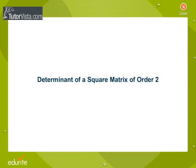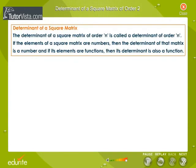Determinant of a Square Matrix of Order 2. The determinant of a square matrix of order n is called a determinant of order n.